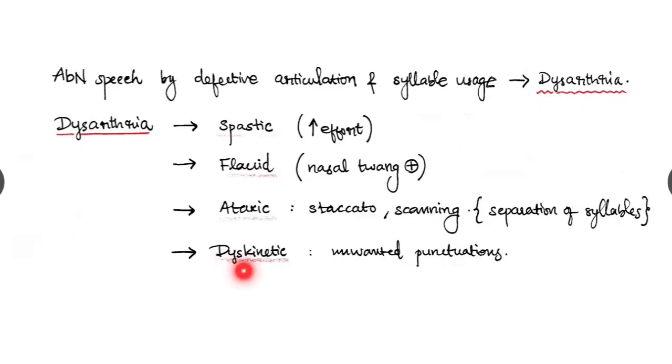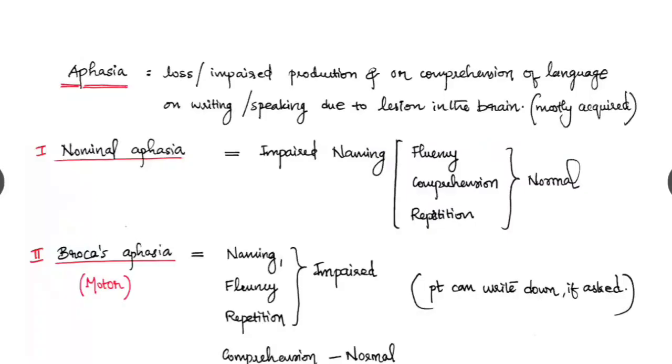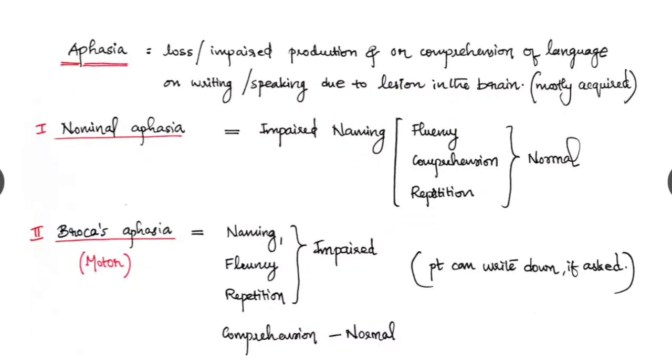And dysarthria can be dyskinetic type where unwanted punctuations are seen. Aphasia, it is a loss or impaired production or comprehension of language or writing or speaking due to the lesion in the brain. Mostly it is acquired. It can be of four types.